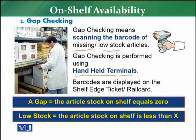Barcodes are normally displayed on the shelf. If you observe, products have price tags, and these price tags normally have barcodes available on the rail cards or on the shelf edge tickets. From there you can easily identify that the product was available and how much stock it has, because the HSD has the stock record and the stock availability status.